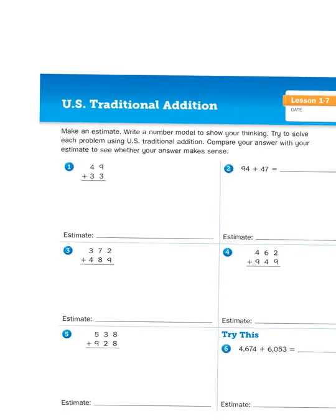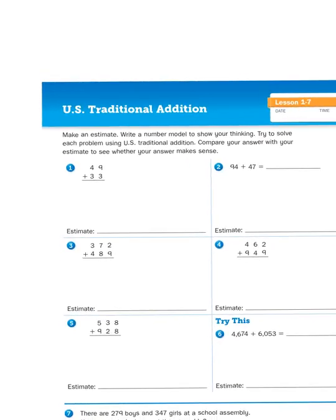Okay, so here's what we're going to be doing. It says, make an estimate, write a number model to show your thinking. Try to solve each problem using U.S. traditional addition. Compare your answer with your estimate to see whether your answer makes sense.